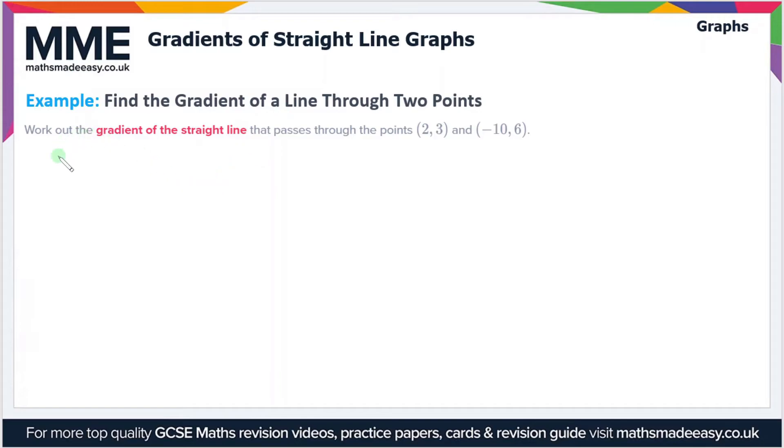Here we're finding the gradient of a line through two points. You have to work out the gradient of the straight line that passes through the points (2, 3) and (-10, 6). These can be our x1, y1 and x2, y2 coordinates respectively.